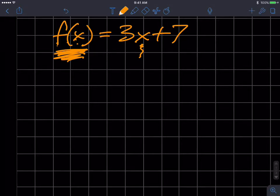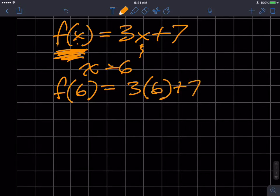Let's say that I want to evaluate this function when x is equal to 6. Well, I would write f of 6 is equal to 3. And wherever there's an x, I'm going to substitute the number 6 in. And I'm going to simplify this expression on the right-hand side. 3 times 6 is 18. Plus 7, 25.